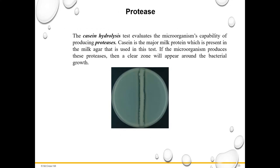The casein hydrolysis test is similar — it evaluates the microorganism's capability of producing proteases. Casein is a milk protein, so these are sometimes called milk agar plates. The casein protein is embedded in the agar, and you look for clearing around the bacterial growth. If you see a clear zone around the bacterium, it's positive for proteases, meaning that bacterium produces proteases that can digest the casein protein in the milk agar.